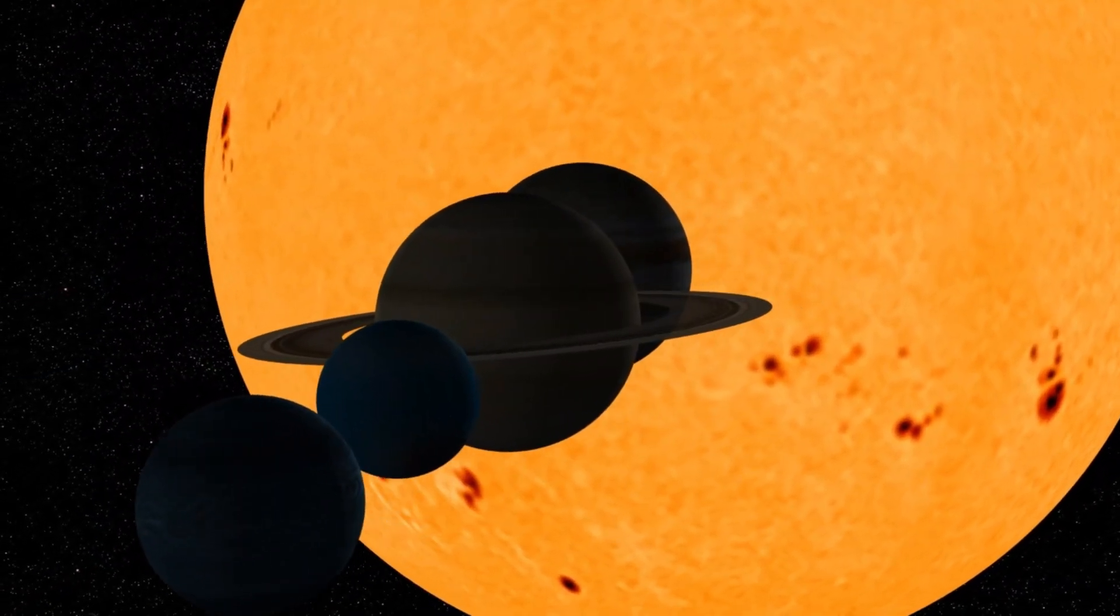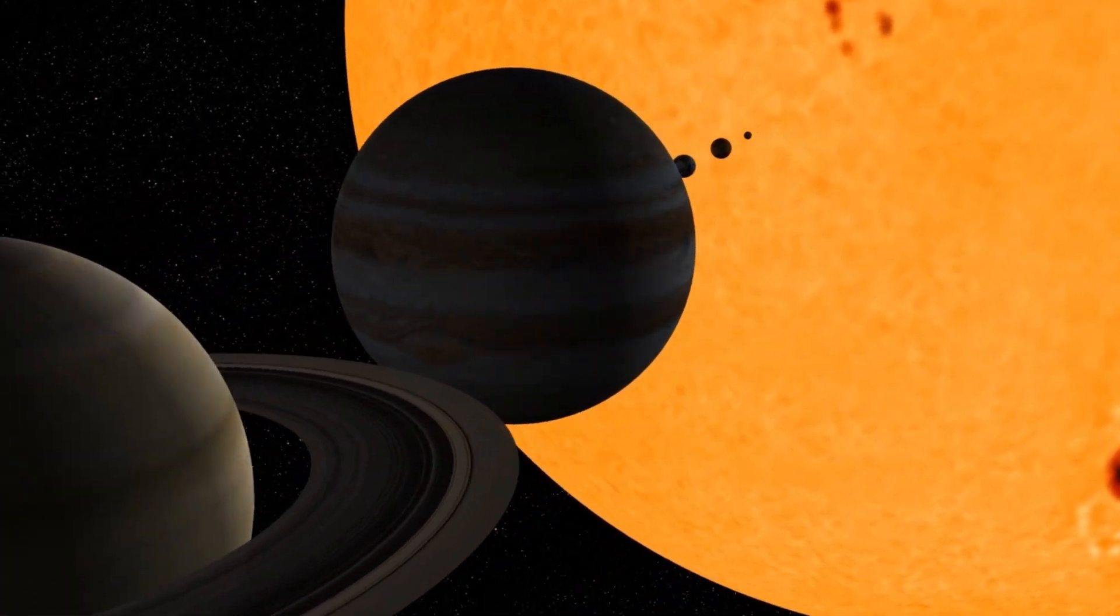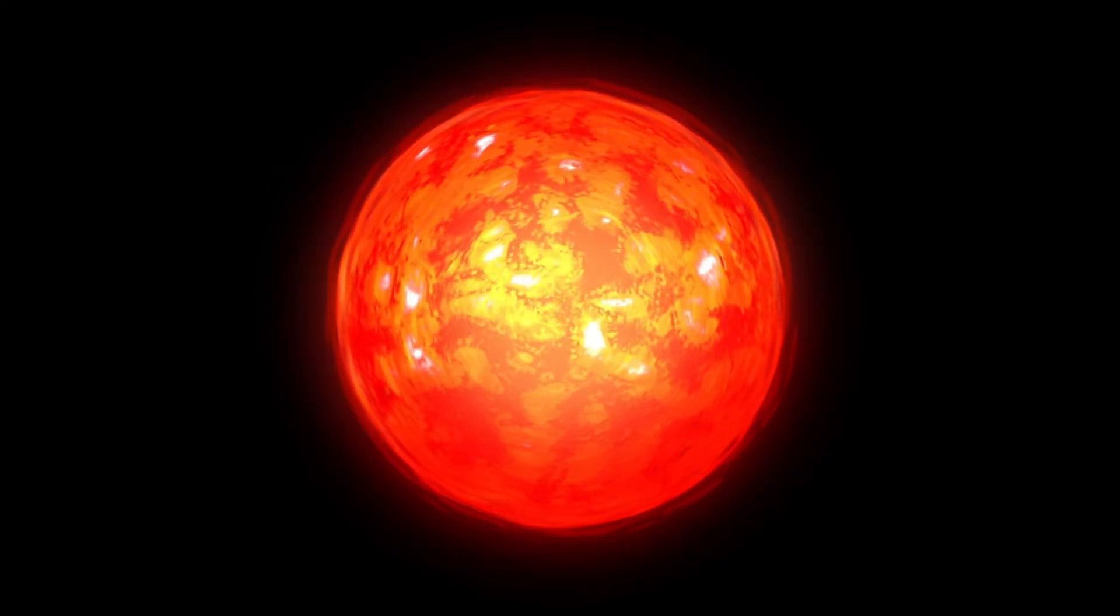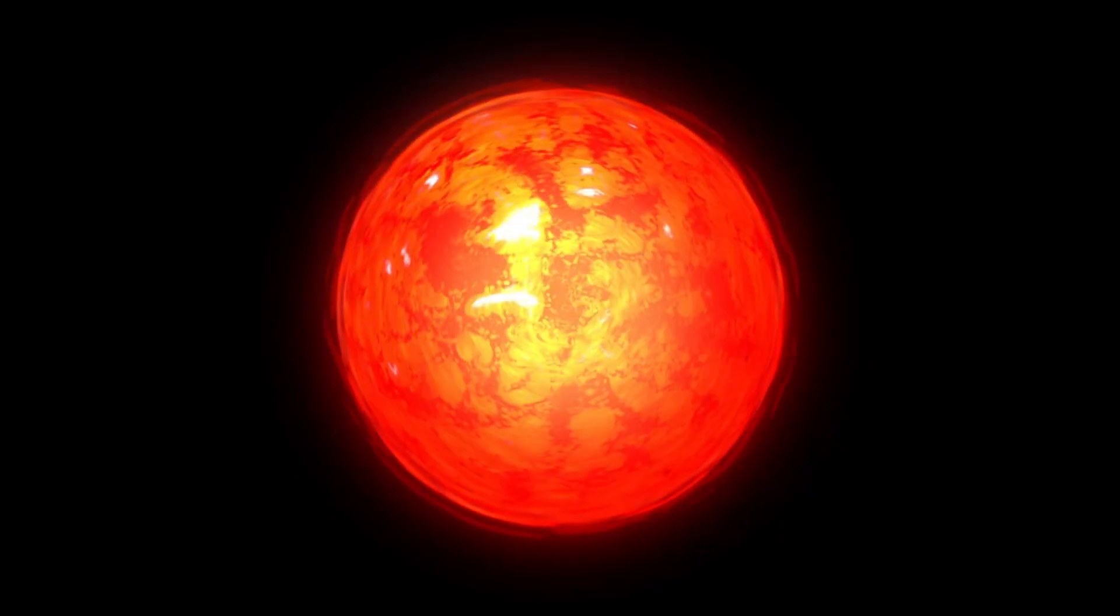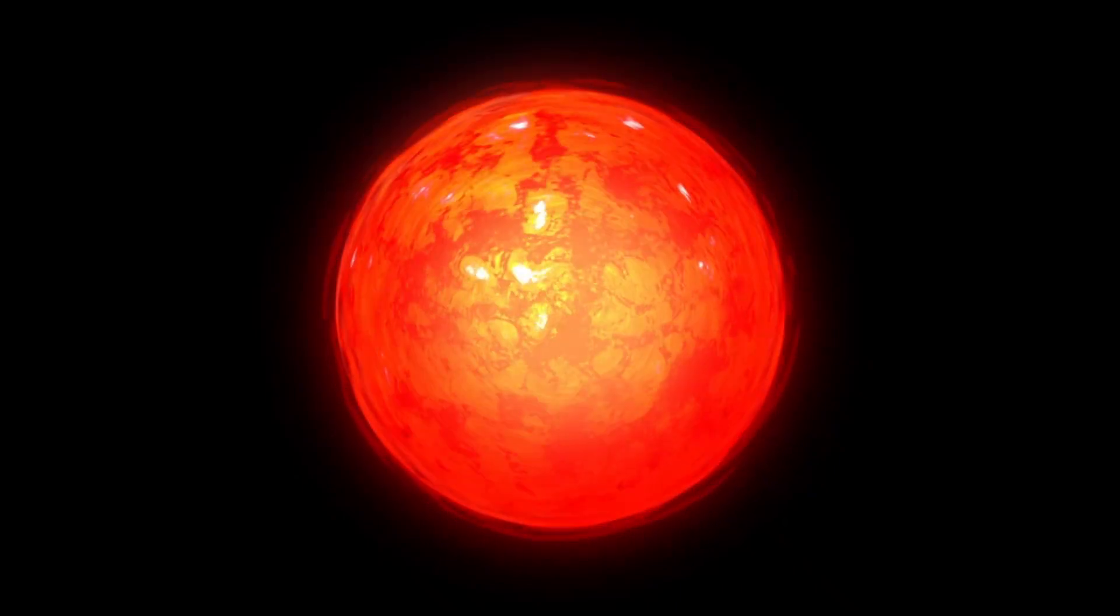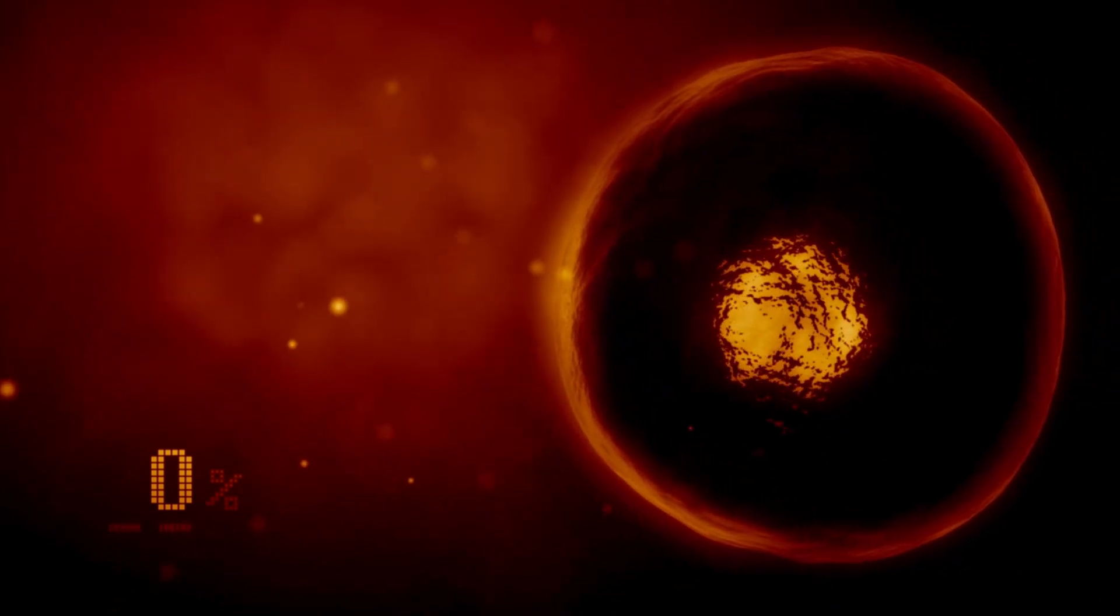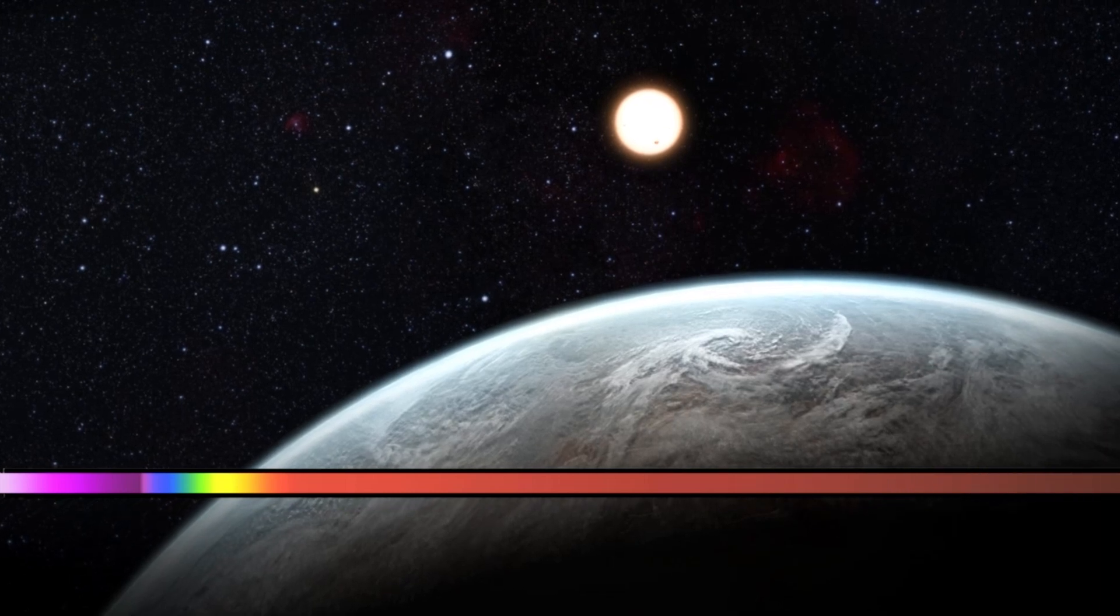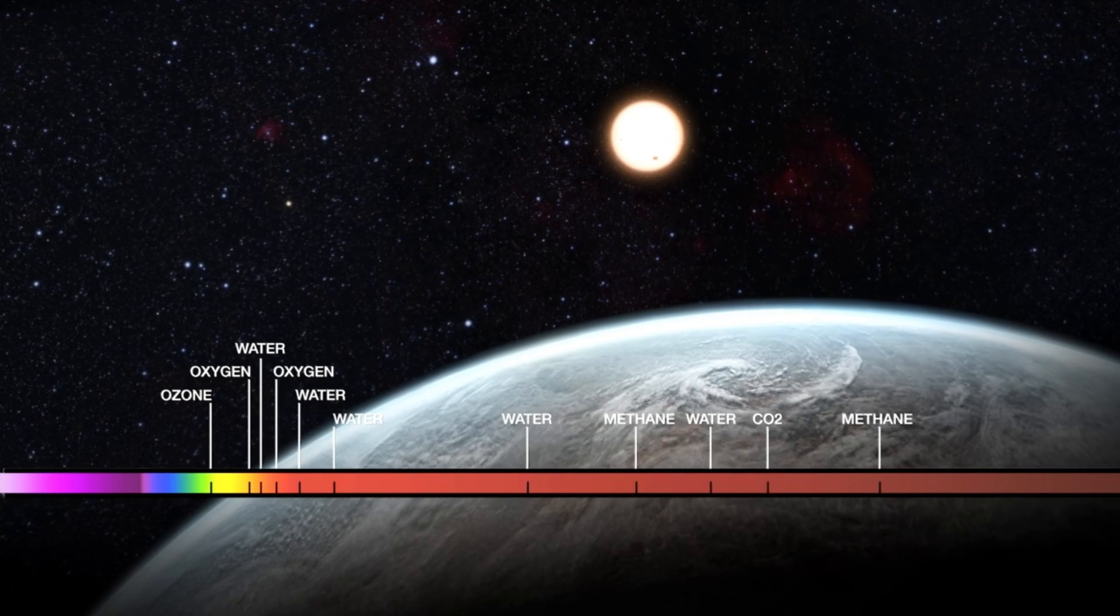This staggering size not only highlights Betelgeuse's physical grandeur but also reveals where it stands in its life cycle. As a red supergiant, Betelgeuse is approaching the twilight of its existence, expanding and cooling after having undergone nuclear fusion processes that convert hydrogen into helium in its core. Estimated to be between 8 and 8.5 million years old, Betelgeuse has undergone dramatic transformations over millions of years to become the remarkable red giant we observe today.